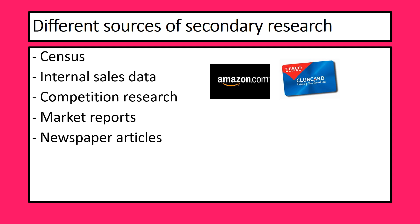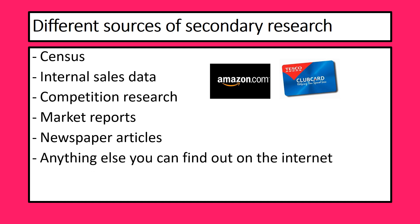And then there are newspaper articles. If you read newspapers, magazines, or various websites, you'll find out lots of information that you might be able to use to understand your products and the market you're in. Basically anything else you can find on the internet counts. There is a huge amount of secondary research out there, though it can be hard to sift through. Always bear in mind the downsides: it might be out of date, it might be biased, and it's certainly not answering the specific question you set out.